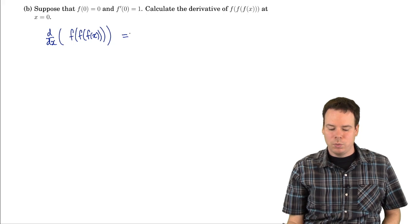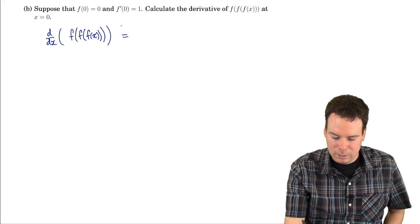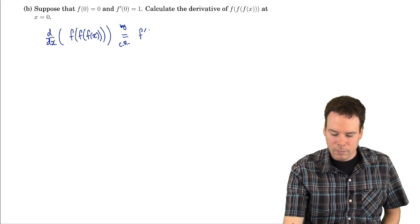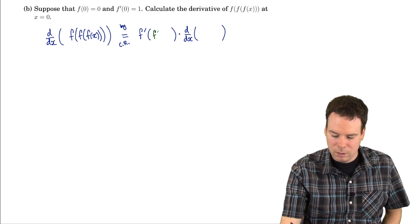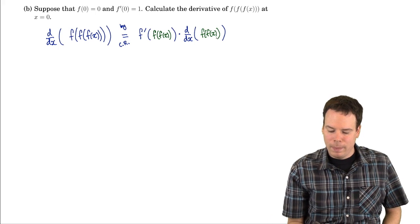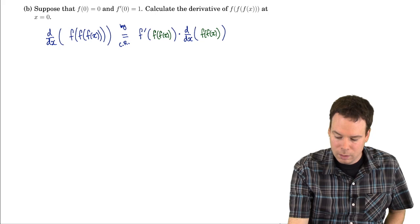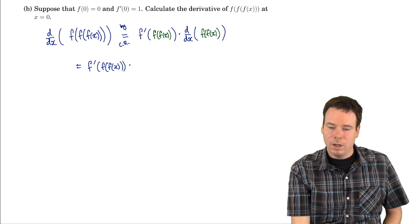We just sort of peel back the layers one by one. The outermost function is f and then it's got some inside function, which we can deal with later. By the chain rule, it's the derivative of the outside function evaluated at the inside function, times the derivative of the inside function. The inside function in this case is f composed of f of x. We've peeled off one layer, and now we're left with the derivative of the composition of two functions, which gives us f' of f(f(x)) times the derivative of f composed with f.